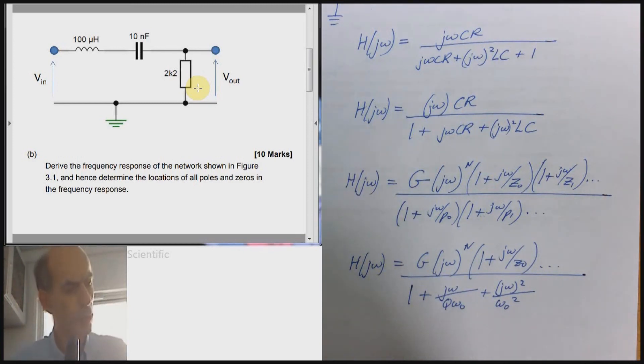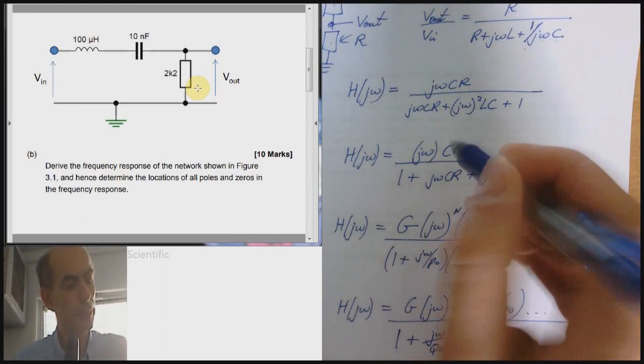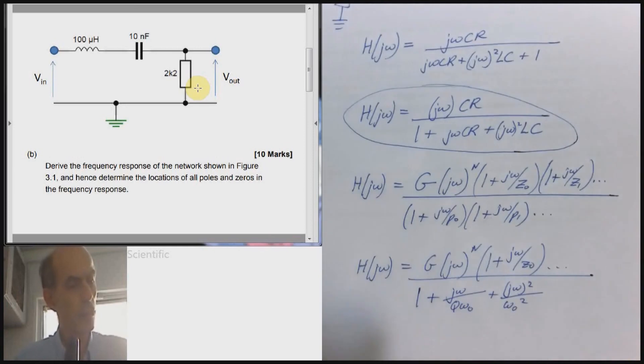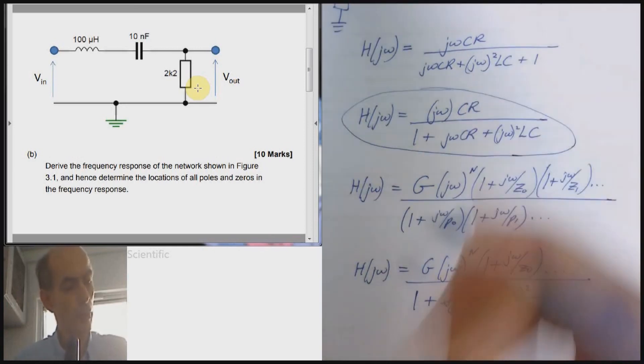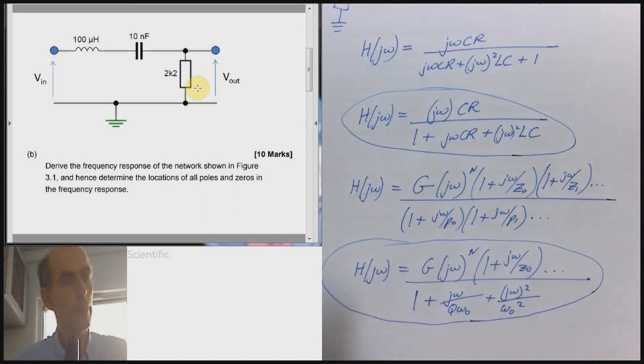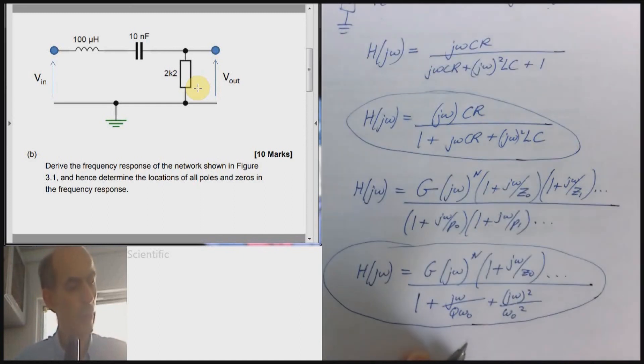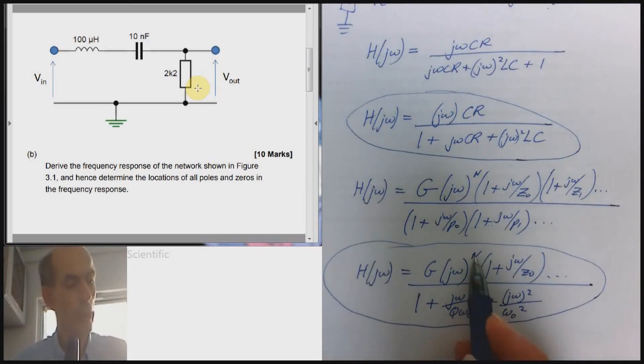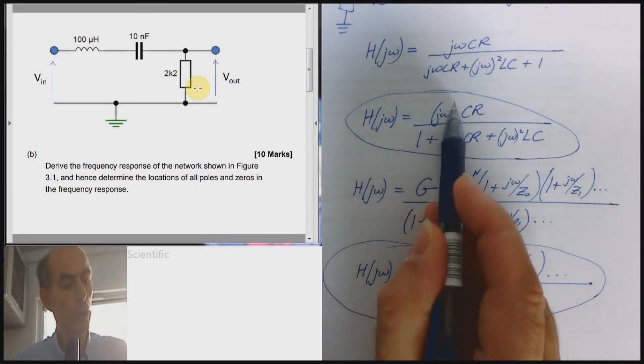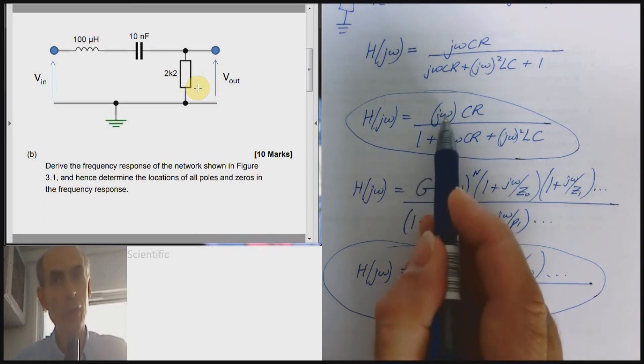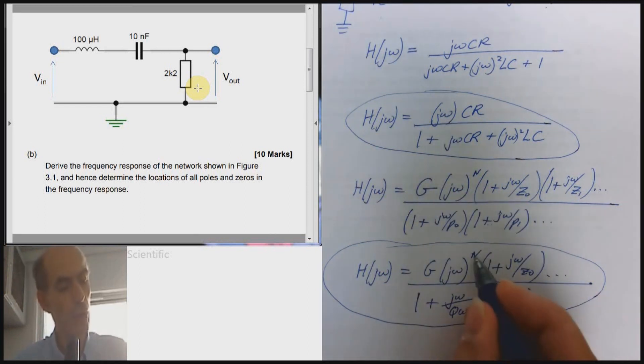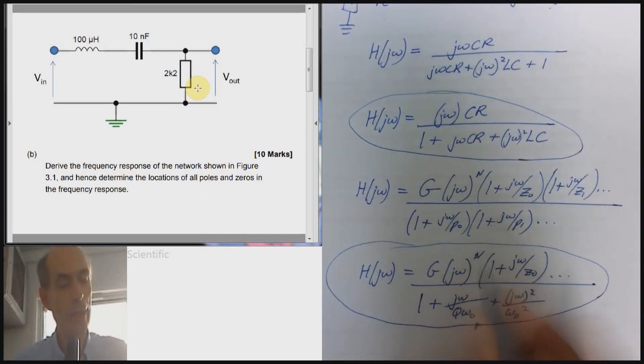Now, we've got to try and express the frequency response that we actually got in these terms. And the frequency response that we got is this one up here. And just by comparing this form with this form, we can note that, well, N, big N, must be 1. Because we've got a jω, but only a single jω. It's not jω squared, but there is one jω there. So N is 1. That means that I have one zero at zero hertz.